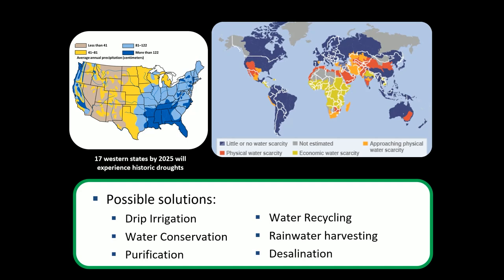Water conservation means using less water. You may be familiar with the three R's of sustainable practices: reduce, reuse, recycle. But it is reduce, reduce, reduce that is absolutely the best thing you can do to make your lifestyle more sustainable. Water conservation is about consuming less and maybe raising prices on products that require a lot of water and are not strictly necessary.